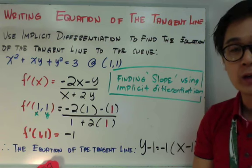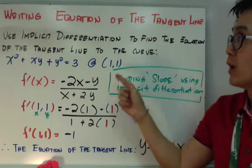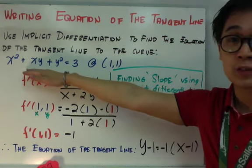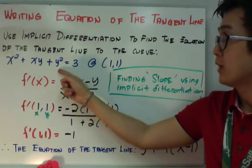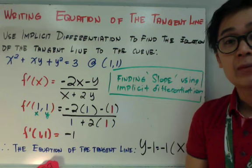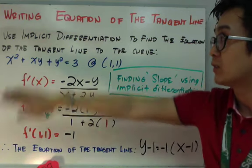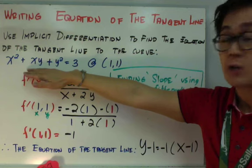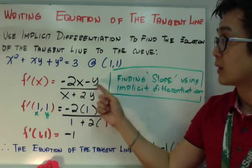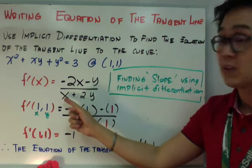Ang hinahanap naman natin ngayon is yung equation ng tangent line dun sa function na x² + xy + y² = 3 sa point na (1, 1). So we will use implicit differentiation to find the tangent line dito sa function na ito. Obviously implicit differentiation siya kasi meron tayong y. Yung first derivative ng function natin is negative 2x minus y, all over x plus 2y. So ito yung slope natin after natin makuha yung derivative nitong function na ito.